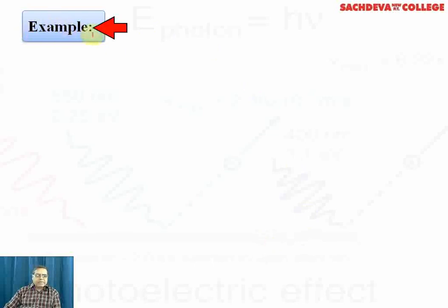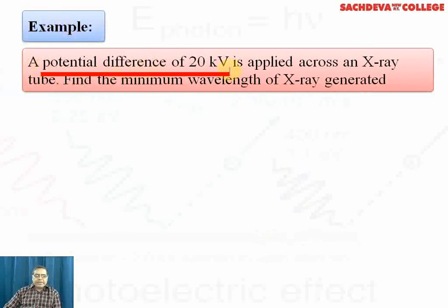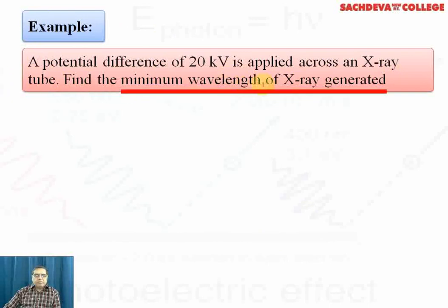Now there are certain examples. A potential difference of 20 kilovolts (20,000 volts) is applied across an X-ray tube. Find the minimum wavelength of X-rays generated. We will take equations eV and hν. eV is energy of electron emitted from cathode. hν is energy of X-rays emitted from target. So eV = hν = hc/λ. From this equation, we get the value of lambda.